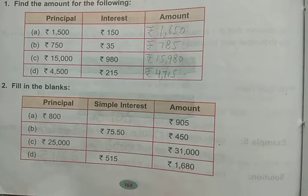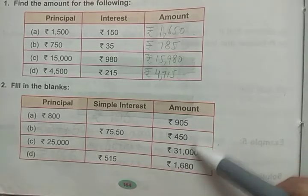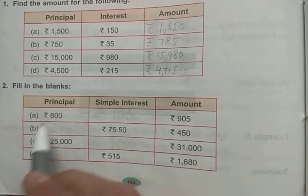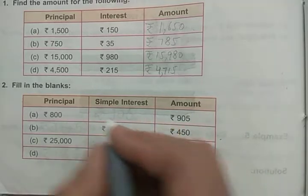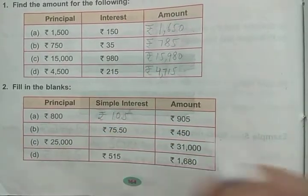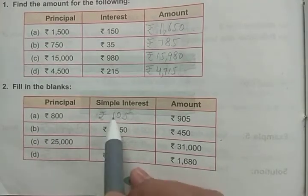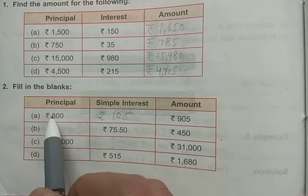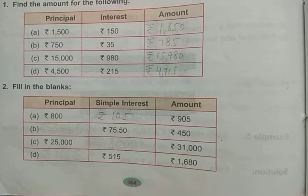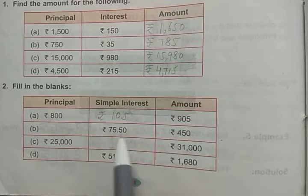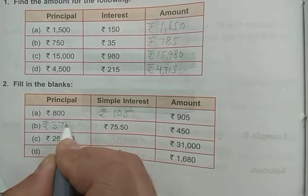In Question Two, the amount is given in every part and we have to find either simple interest or principal by subtraction. For example: 905 − 800 = 105 rupees simple interest. You can verify: 800 + 105 = 905. Another part: 450 − 75 rupees 50 paise = 374 rupees 50 paise as the principal.